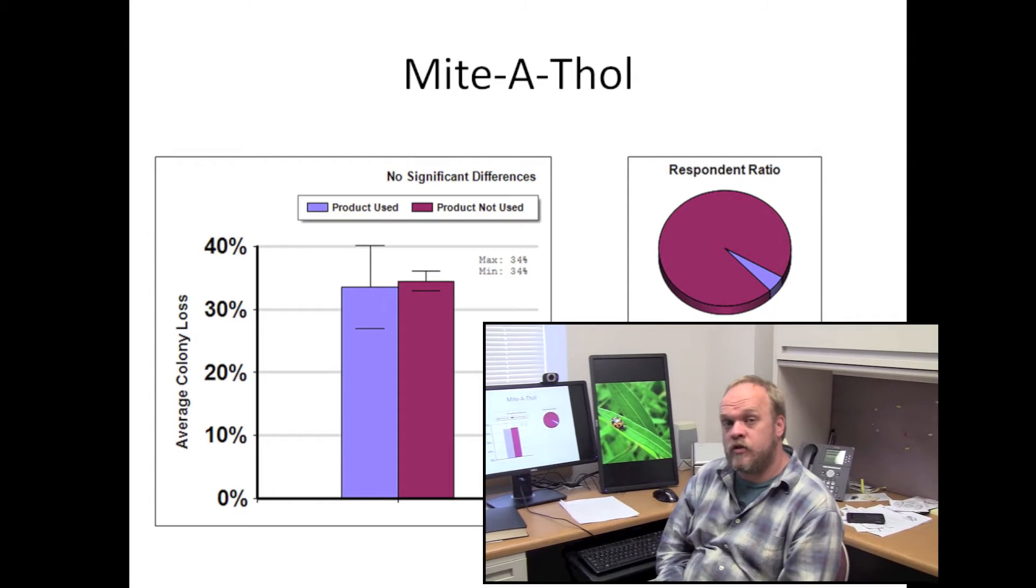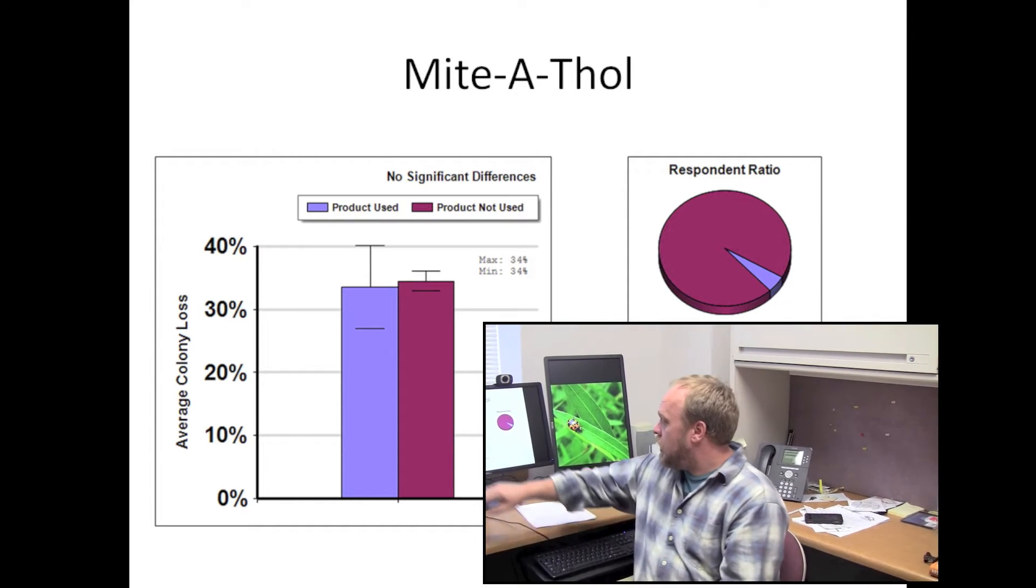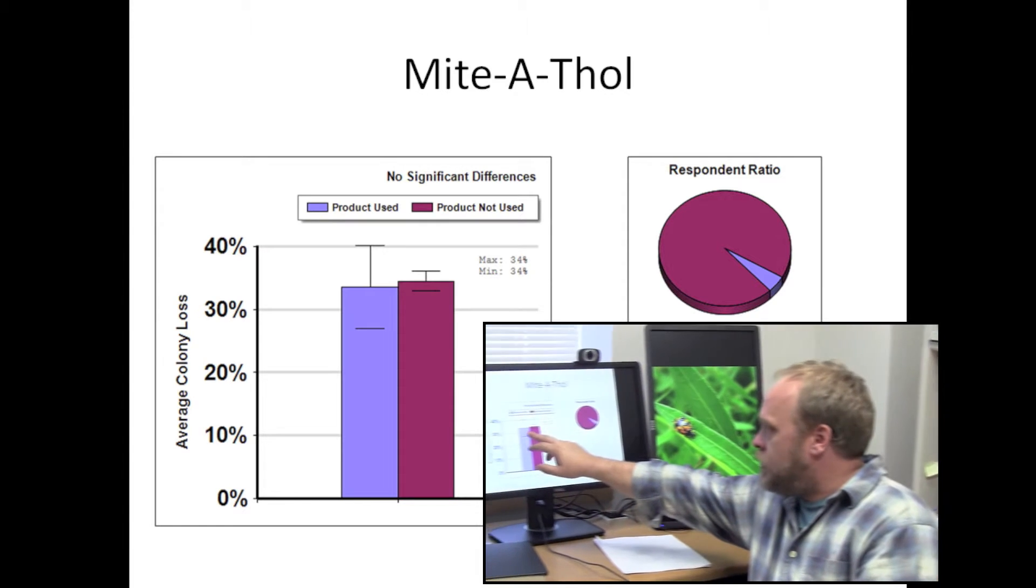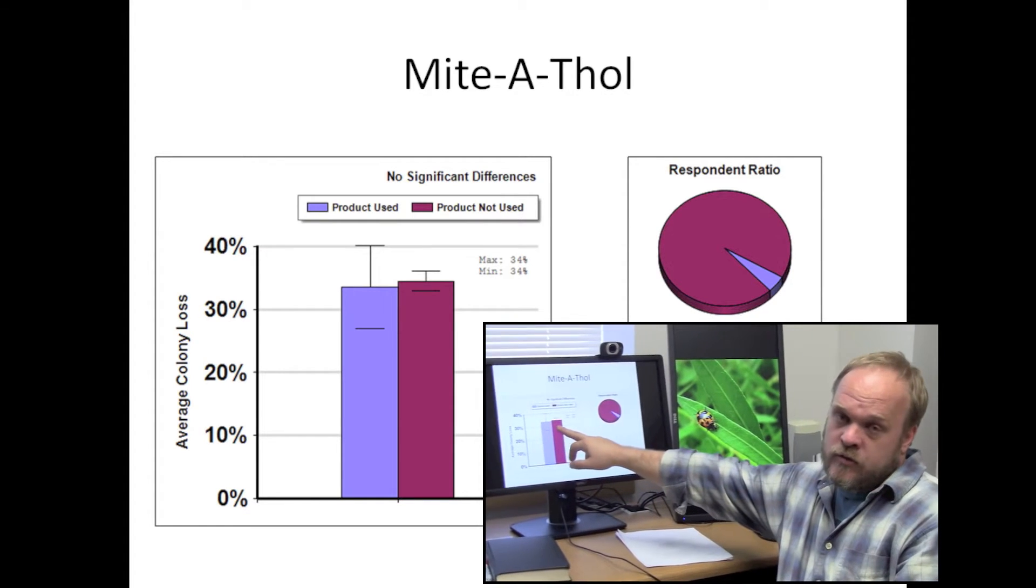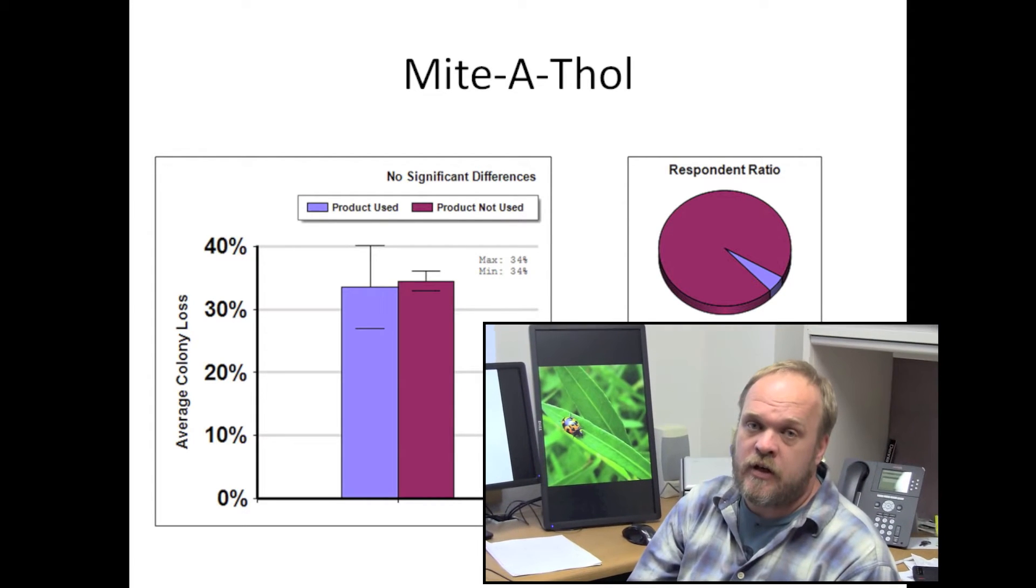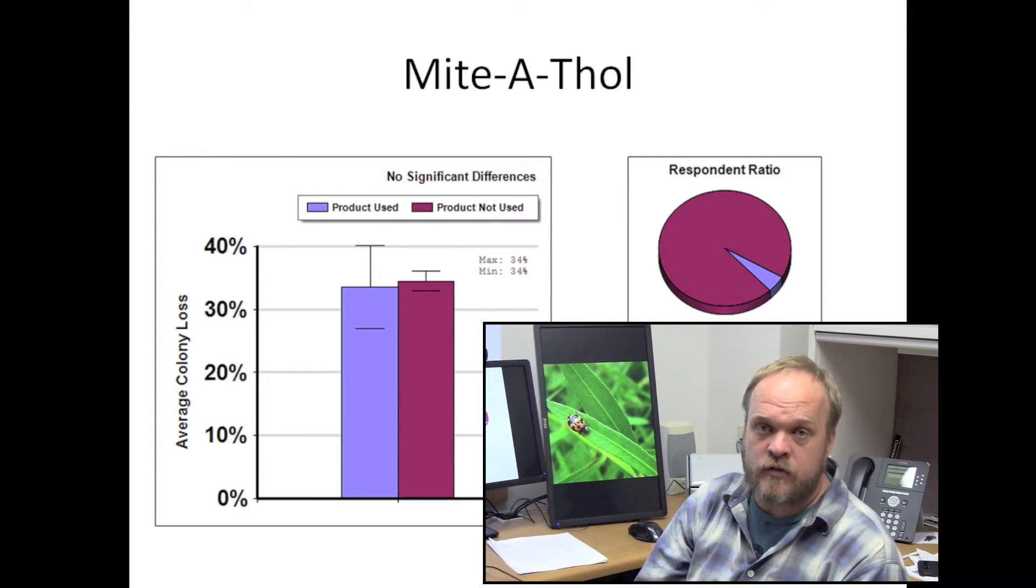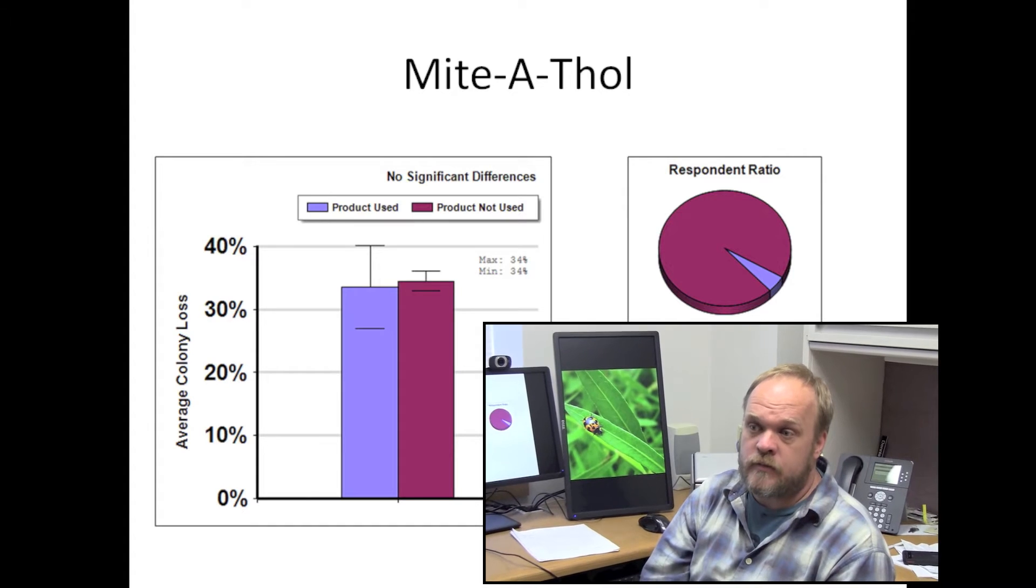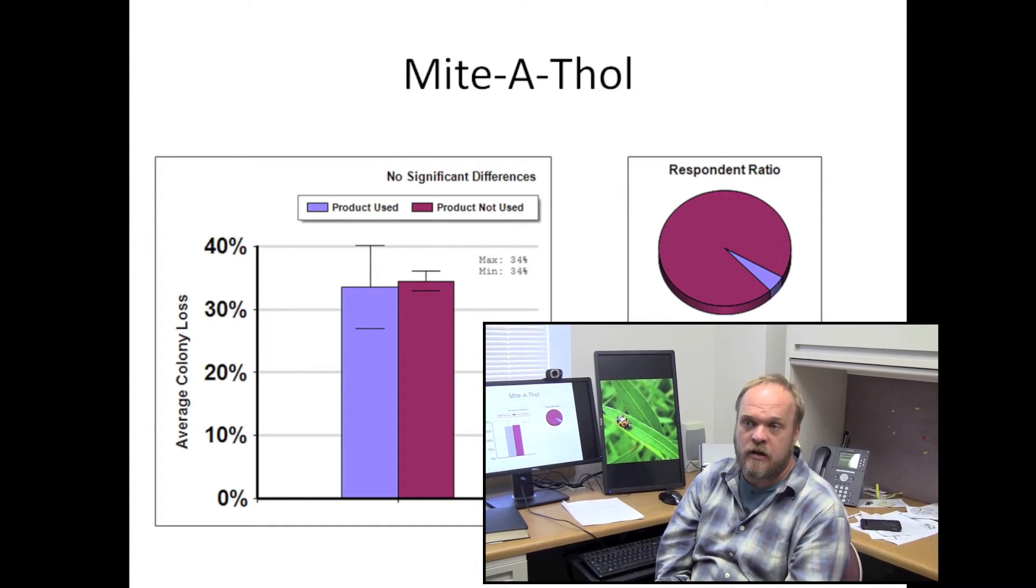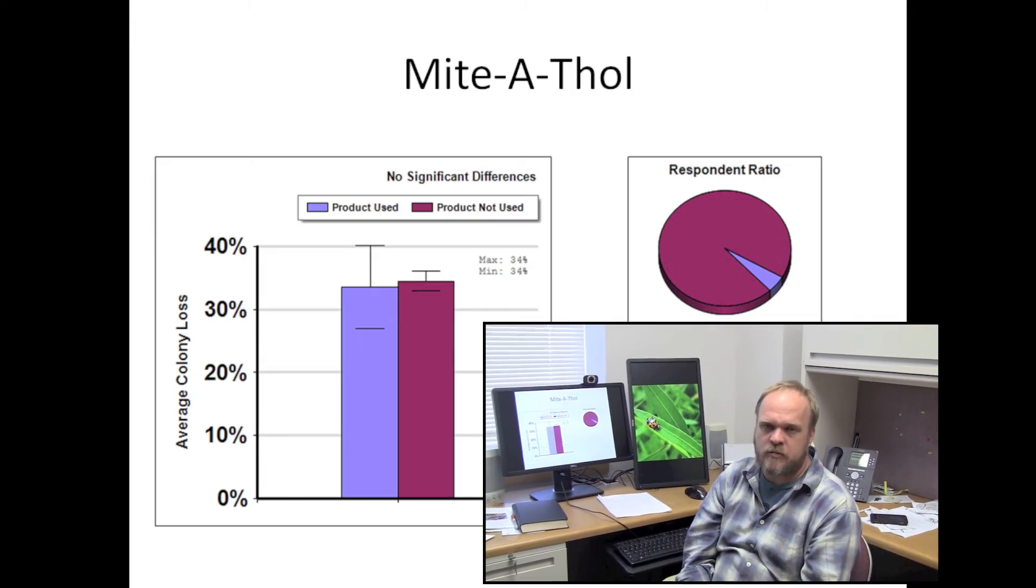Menthol is a product used for honeybee tracheomite control. Again, no difference between those who used the product and those who didn't in terms of winter survivorship. Generally speaking, it's my experience that honeybee tracheomites are not a cause of great concern since they first came into the country in the 1980s. Since then, they don't seem to be as problematic, and so control is probably not needed.